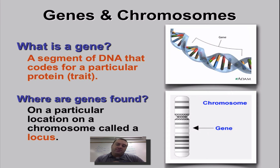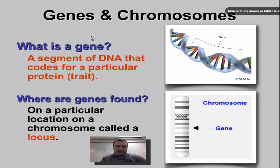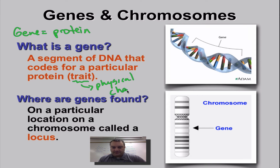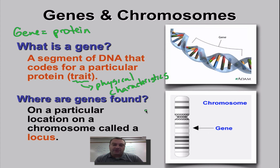A gene is a particular piece of DNA that codes for a particular protein. One gene equals one protein. Now we're going to talk about traits. A trait is a physical characteristic. Often you can see these, but a trait can also be something that happens inside chemically — so it can be internal, external, chemical, or physical, like your hair color. Remember, a gene codes for a protein and then that protein will lead to that trait.